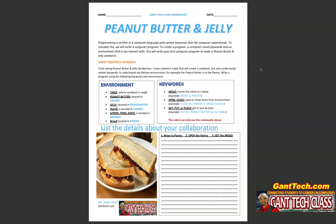Write a program using the following keywords and environment. In my kitchen, if you look at the table, that's where the sandwich is made — my robot understands 'table.' My peanut butter is located in the pantry, so my robot understands 'peanut butter' and 'pantry.' My jelly is located in the refrigerator. My plate is located in the cabinet. My spoon, fork, and knife are located in the drawer. Lastly, my bread is also in the pantry. So my robot can interact with this environment.